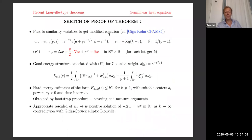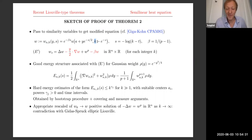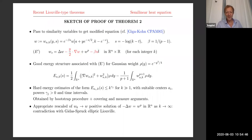The first idea is to go to self-similarity variables following Giga-Kohn, but not just the standard way — you allow flexibility in the rescaling time. You rescale around any center A and around any final time K. Since you start from an entire solution, you want to show the result by contradiction and you have this flexibility. This introduces two new terms: a drift term like an Ornstein-Uhlenbeck type equation, and a linear absorption term. From Giga-Kohn it is well known that you have a good energy structure, and the associated energy is this modified energy with a crucial Gaussian weight ρ.